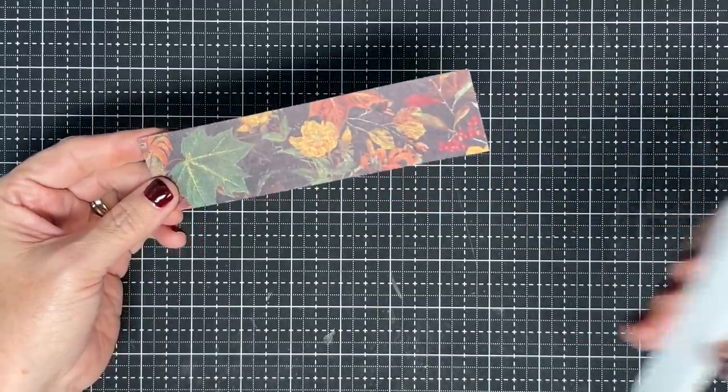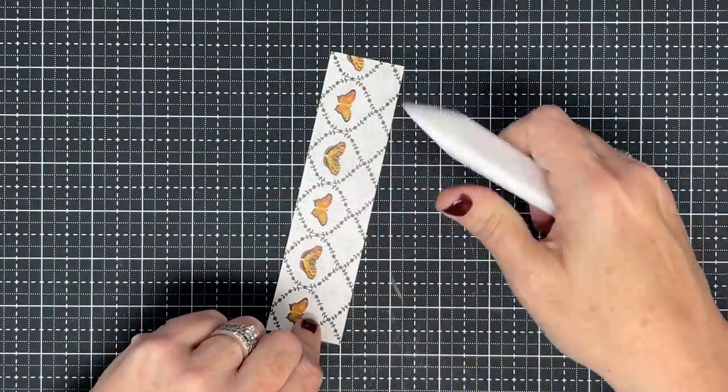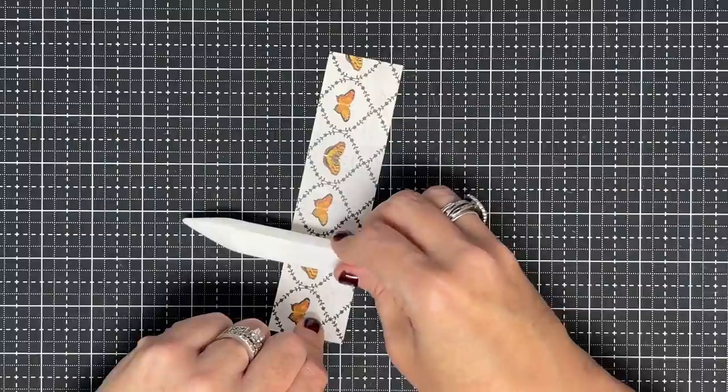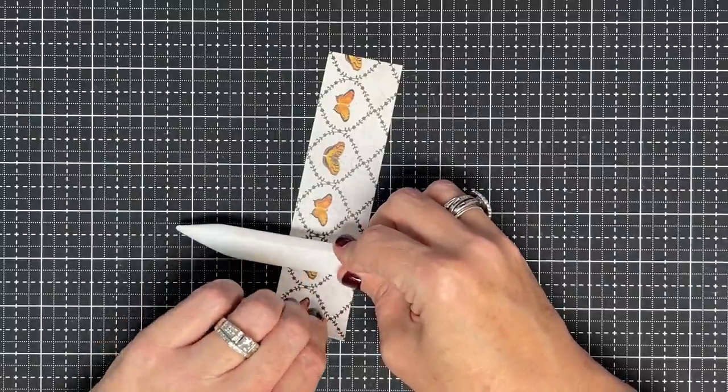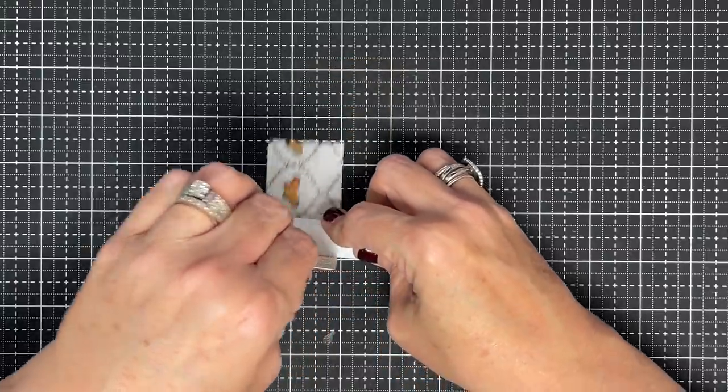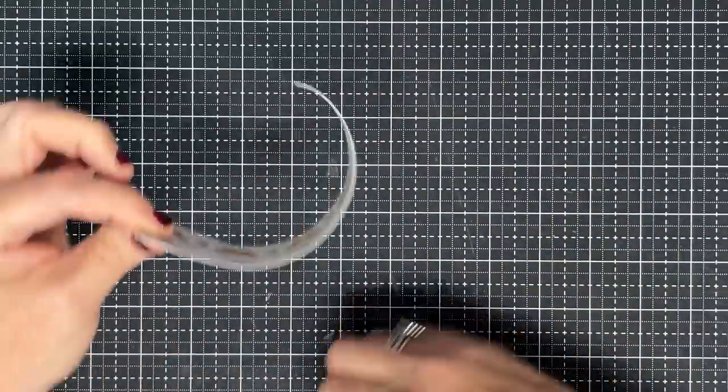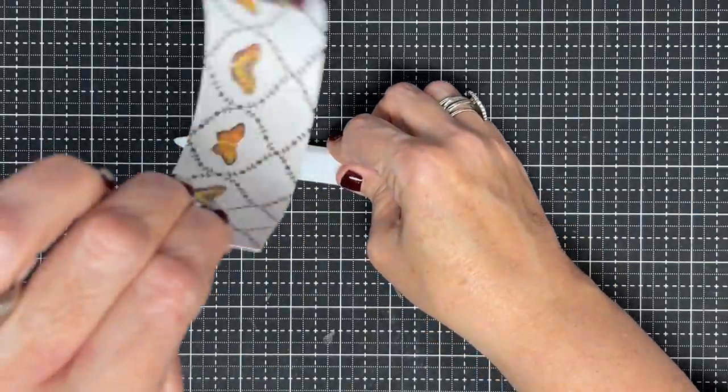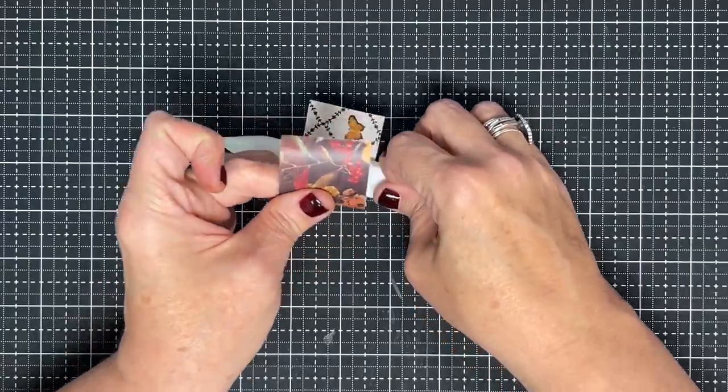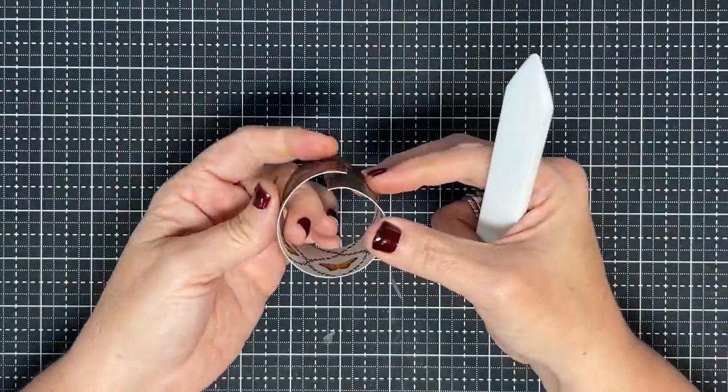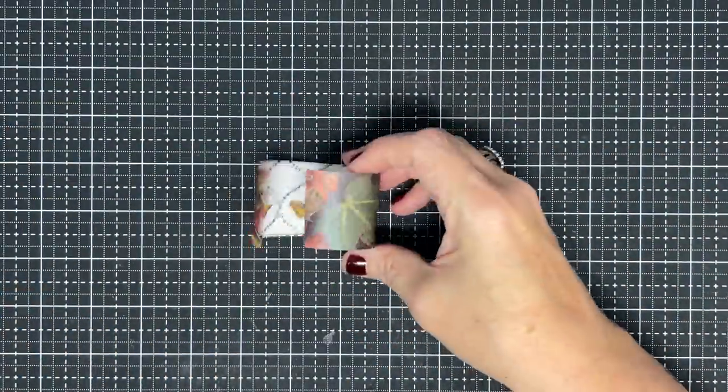We're going to curl it again like we did on the other because we want to make it easy to glue it on. But I learned something. If you'll place your bone folder down on your work surface with the paper between it and the surface, and the taller you pull up, the curlier your paper is. If you pull out like this, it's going to be flatter. But if you pull up like that, it's going to be curlier. Those of you that use a straightening iron to curl your hair, you know exactly what I'm talking about.